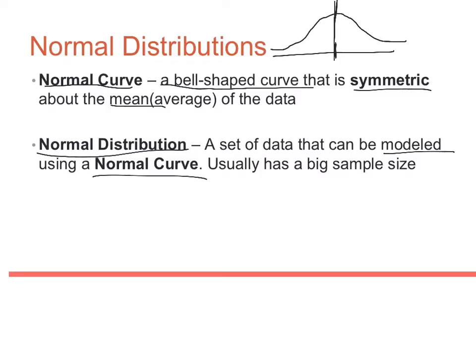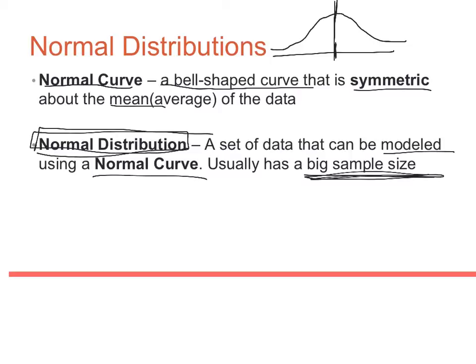All normal distributions are going to be modeled using a normal curve. Usually we get normal distributions when we have big sample sizes — for example, if we have a sample of about 10,000 out of an entire population, we know the distribution will be very close to being normal, having this bell shape.